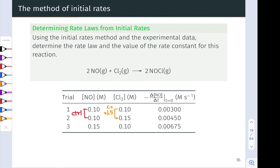This problem is useful because it doesn't use a simple doubling — we need to think through it mathematically. Since Cl2 is the concentration changing between trials one and two, those trials give us insight into the kinetic order of Cl2. The initial rate increases by a factor of 1.5 from trial one to trial two, which equals the factor by which Cl2 concentration was increased. From this, we infer the reaction is first order in Cl2, since an increase in concentration by a factor of 1.5 led to an increase in rate by 1.5 to the first power.